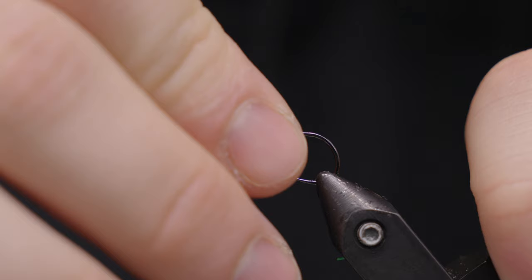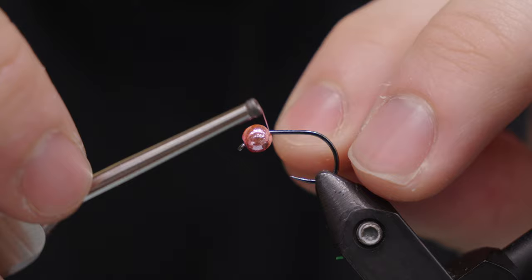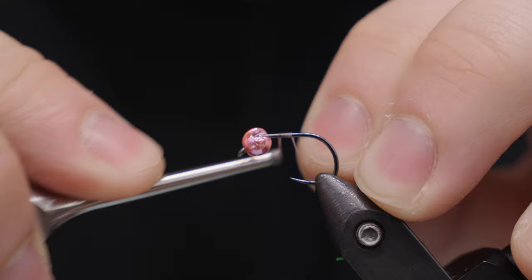This bead is a slotted tungsten bead, 5.30 seconds or 3.8 millimeter. This is metallic light pink from Hairline. It's a nice color. I like these metallic colored ones because they don't really chip as much on the bottom. If you're bouncing around down there, the color lasts a lot longer.